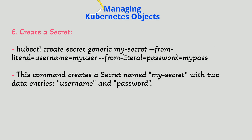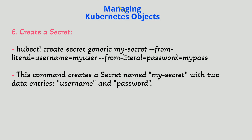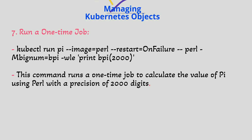6. Create a secret. `kubectl create secret generic my-secret --from-literal=username=myuser --from-literal=password=mypass`. This command creates a secret named my-secret with two data entries: username and password.